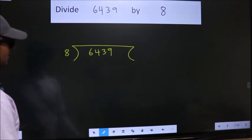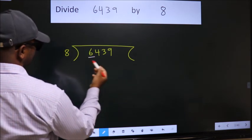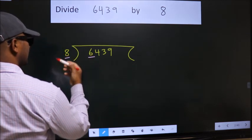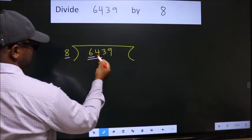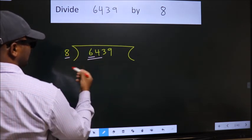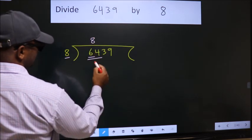Next. Here we have 6, here 8. 6 is smaller than 8, so we should take 2 numbers, 64. When do we get 64 in 8 table? 8 8s, 64.